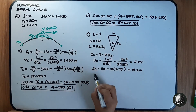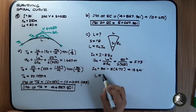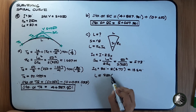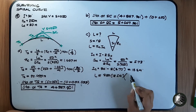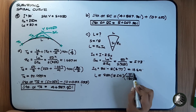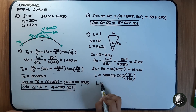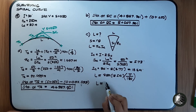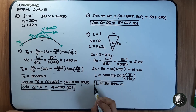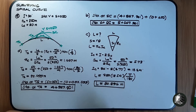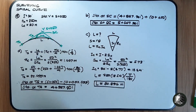Now we can find L. L equals RC multiplied by IC: 250 multiplied by 18.54 degrees. Since it is in degrees, we multiply by pi over 180 degrees to convert to radians. Therefore L equals 80.896 meters. This is the length of our circular curve. That concludes example number 44.